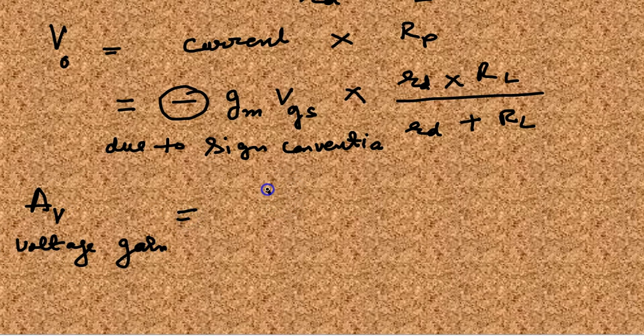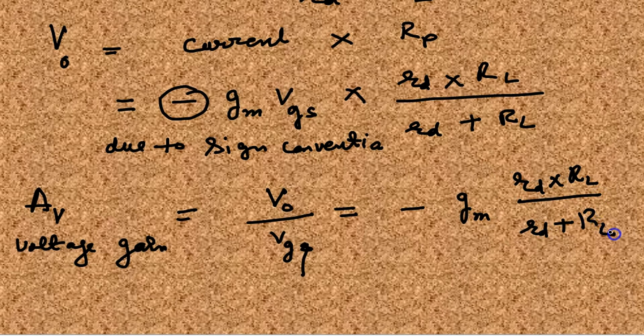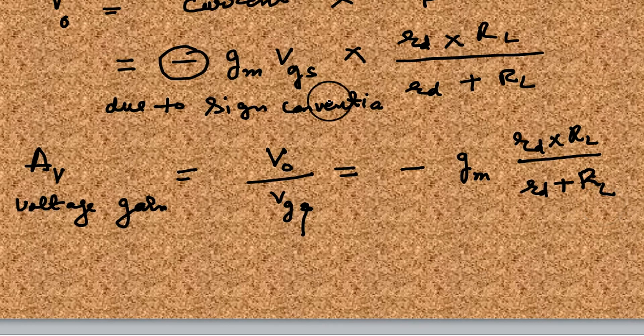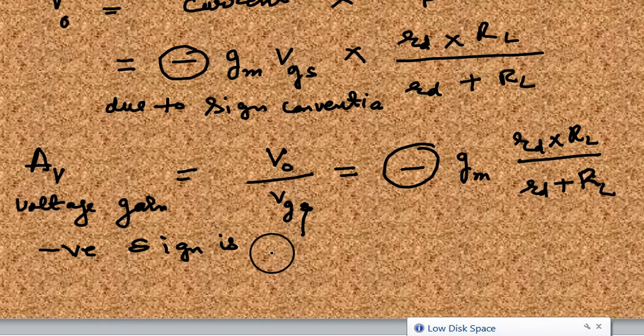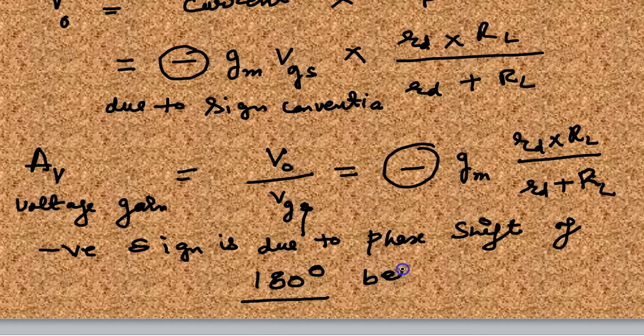We find from here the voltage gain. Voltage gain is output voltage over the gate-source voltage, which is the input voltage. So it comes out with a negative sign. The negative sign is due to the phase shift, that output voltage is out of phase with the input voltage.